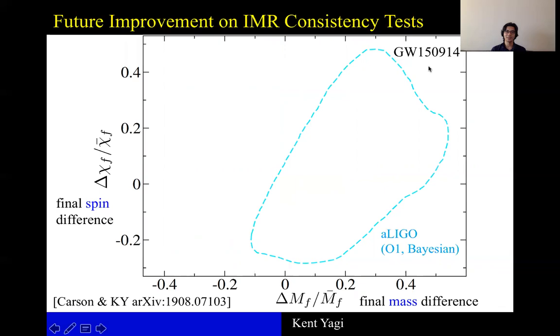This was done by the LIGO-Virgo collaboration, applied to, for example, the first event. And the horizontal axis shows the difference in the mass, final mass, between the inspiral estimated and merger-ringdown estimated values. The same for the vertical axis, but now it's the final spin instead of final mass.